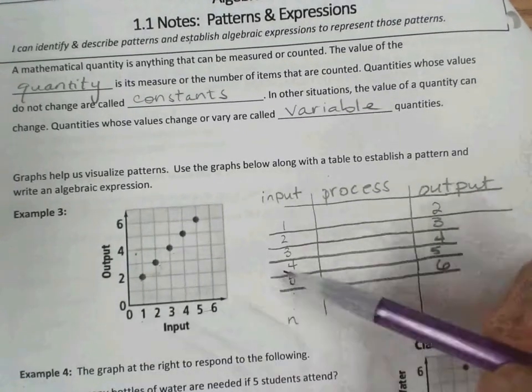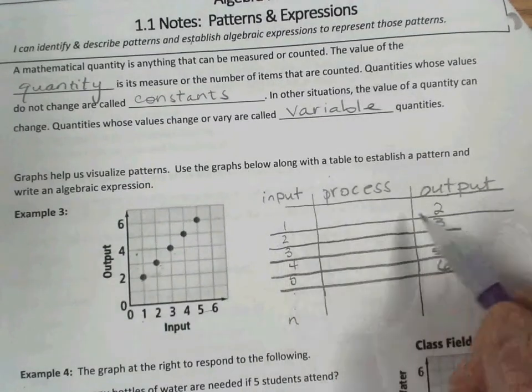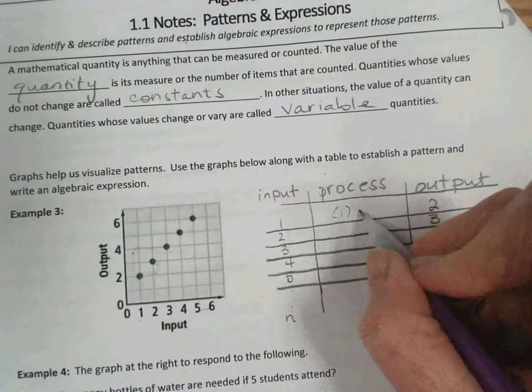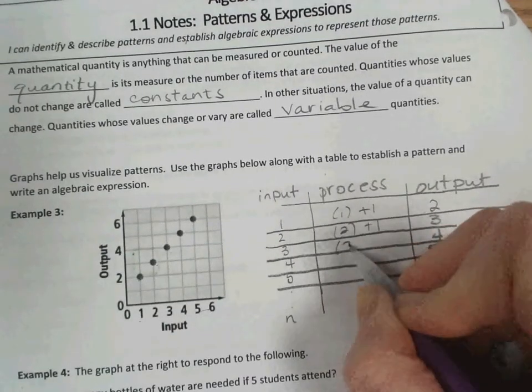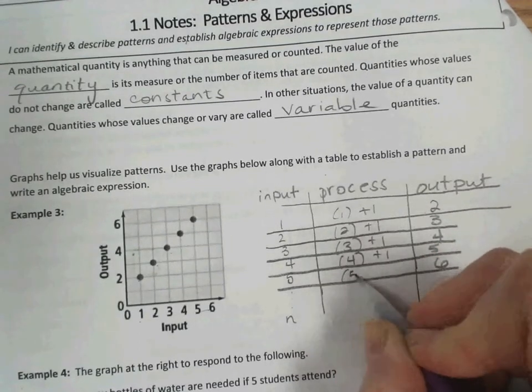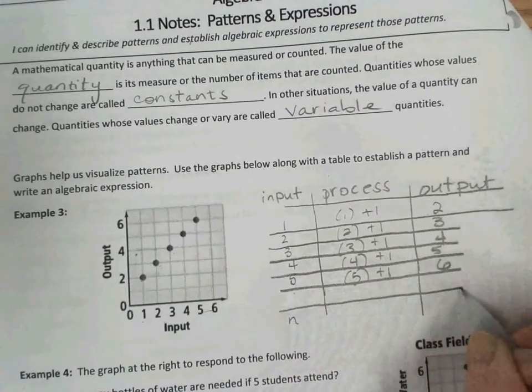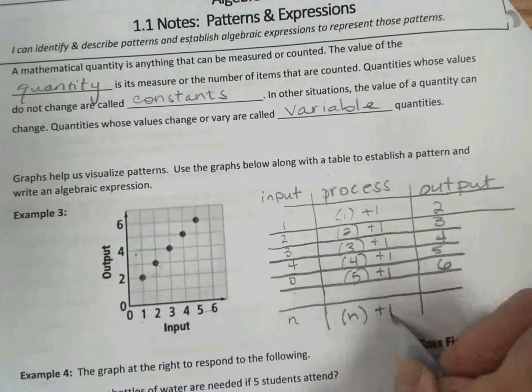So what is the pattern? What is the process? It looks like for each input to get to the output, we just add 1. So we have the 1 plus 1, the 2 plus 1, the 3 plus 1, and so on. And therefore, our rule becomes n plus 1.